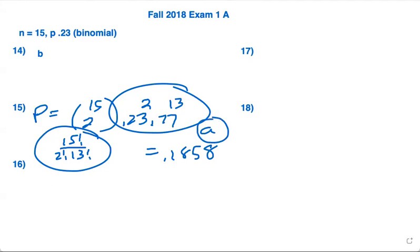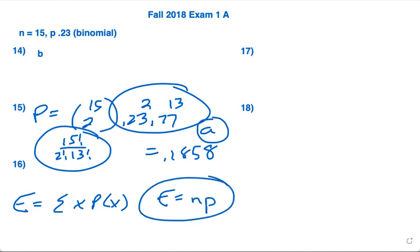They typically ask one of these on every exam one. How many are expected? Well, there's two expected value formulas. There's the sum of x times the probability of x, and there's n times p. In this case, we're doing binomials, so it's just n times p. So 15 times 0.23 gives you 3.45, which is answer choice E.